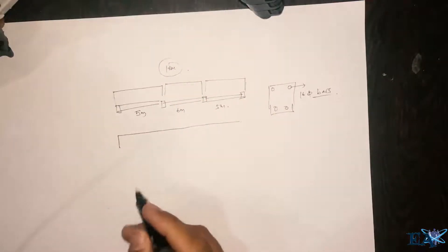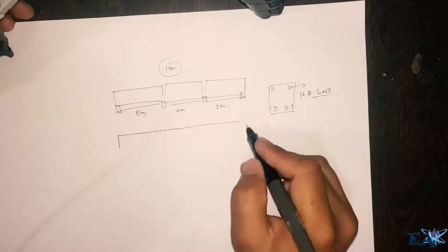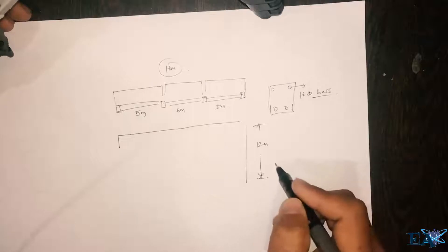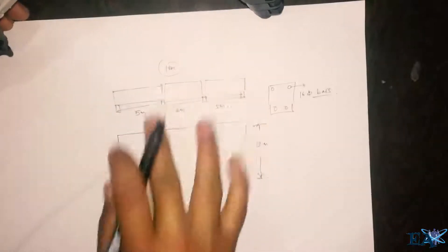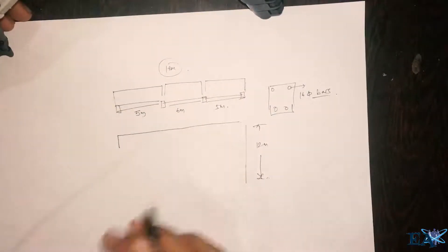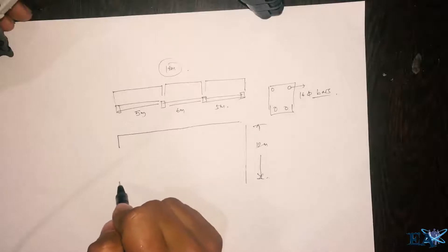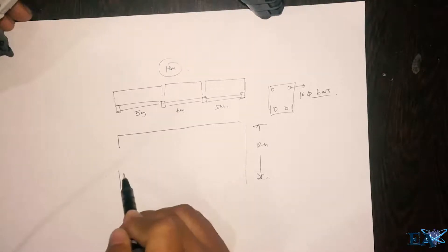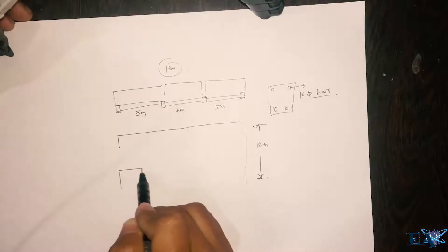The standard size of a bar that comes from the factory is 12 meters, but the total span here is 16 meters. So in that case what happens is you have to begin your bar from here, LD, development length, and after that what do you do, you just keep on going.